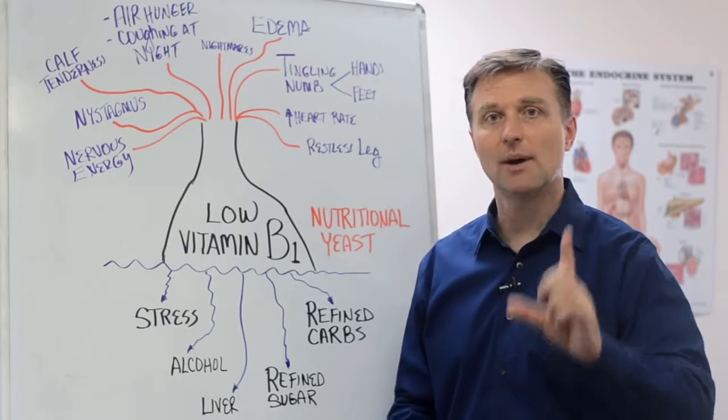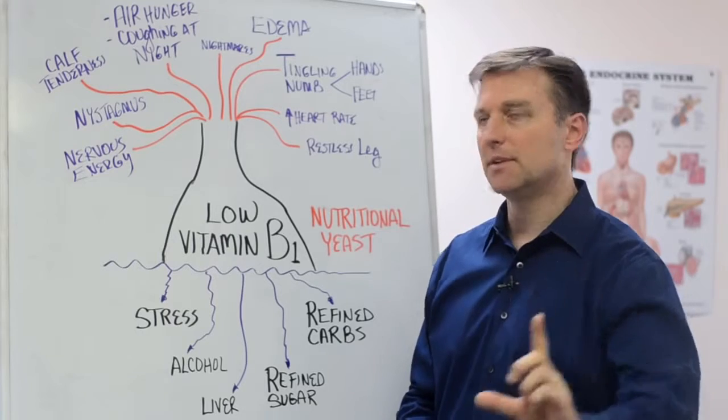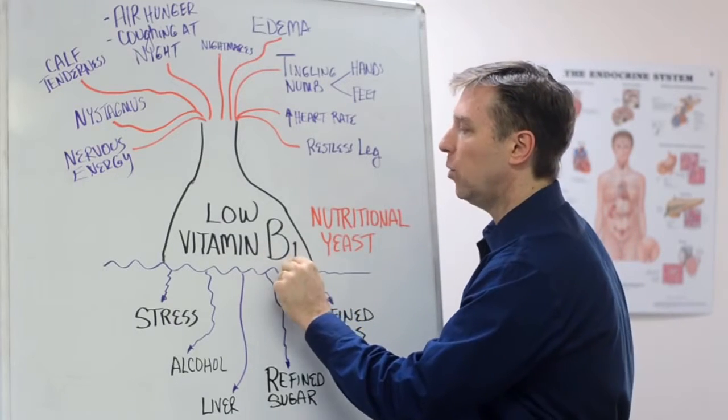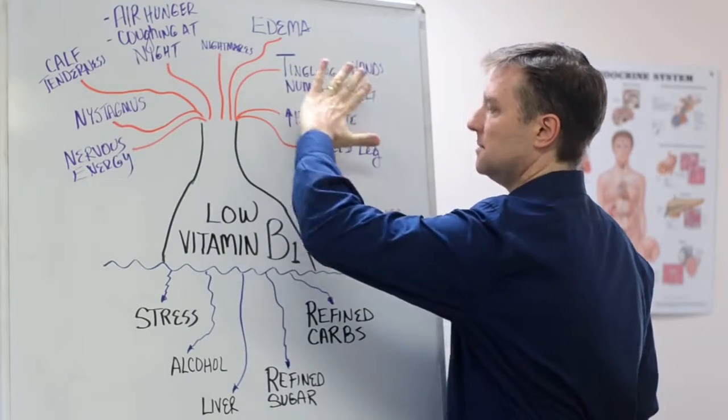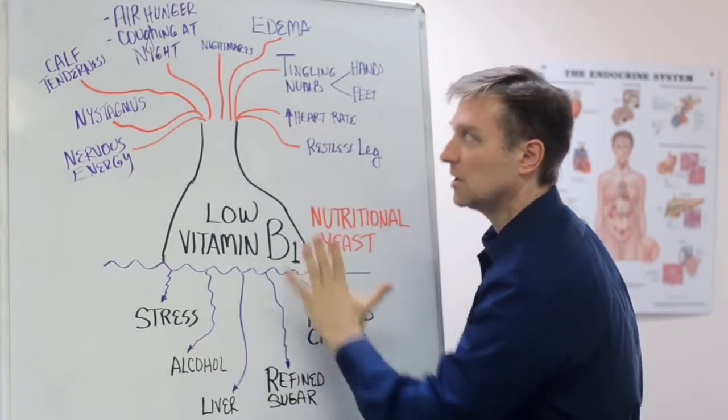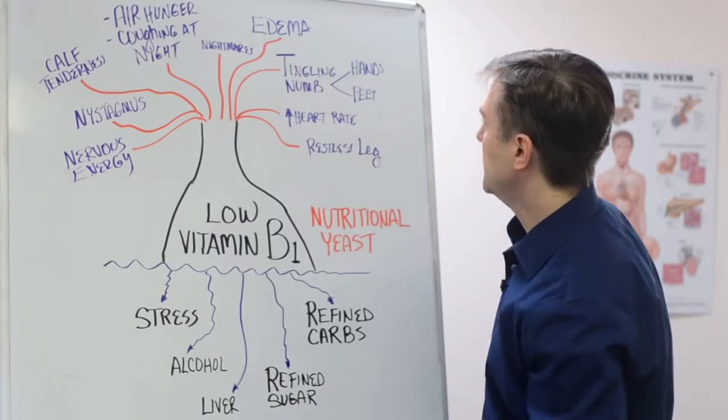Hey, it's Dr. Berg. In this video, we're going to talk about one of the most common vitamin deficiencies, low B1. This is a tree with branches. These are symptoms. These are roots. I know it doesn't look like a tree, but that's what it is.